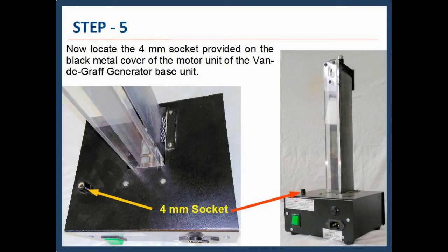Step 5: Now locate the 4mm socket provided on the black metal cover of the motor unit of the Van de Graaff generator base unit.